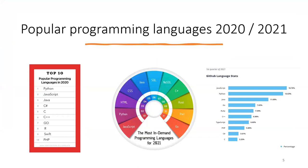Looking at the popular programming languages in 2020 and 2021: in 2020, Python was at the top, and JavaScript was second. In 2021, JavaScript was first and Python second. Considering GitHub language statistics, JavaScript is first and then Python. So across all statistics in 2020 and 2021, Python is in first or second place.